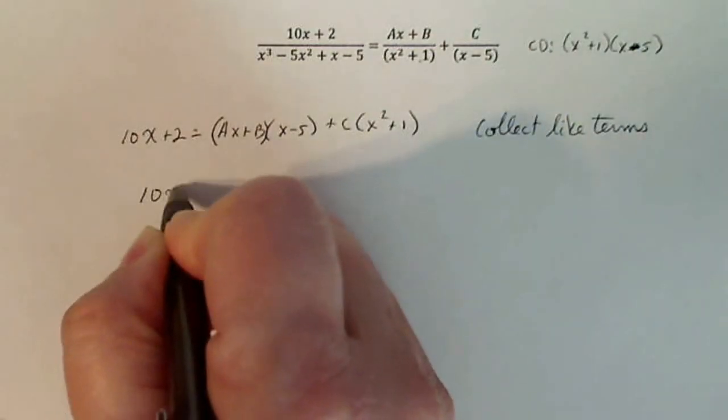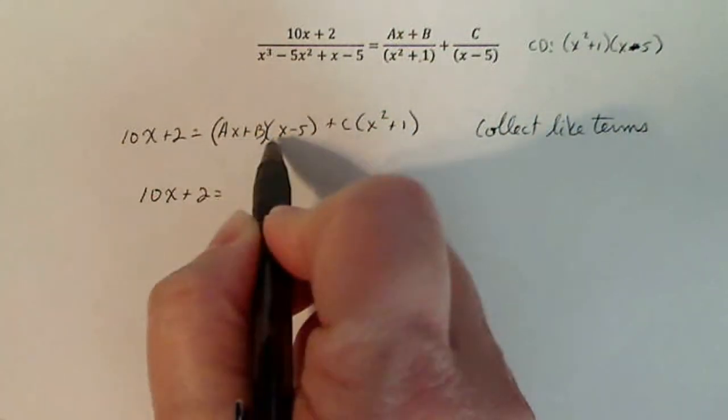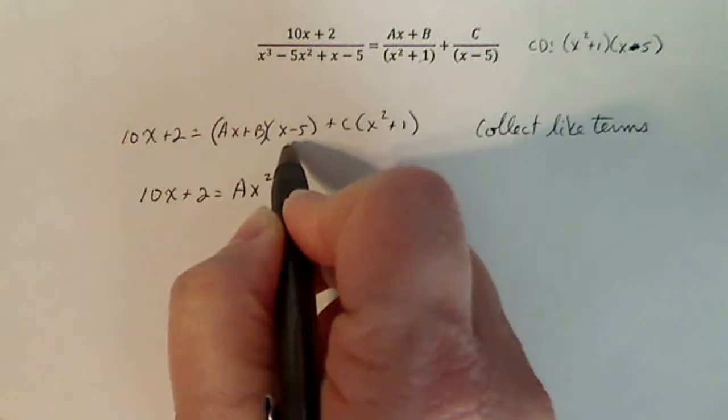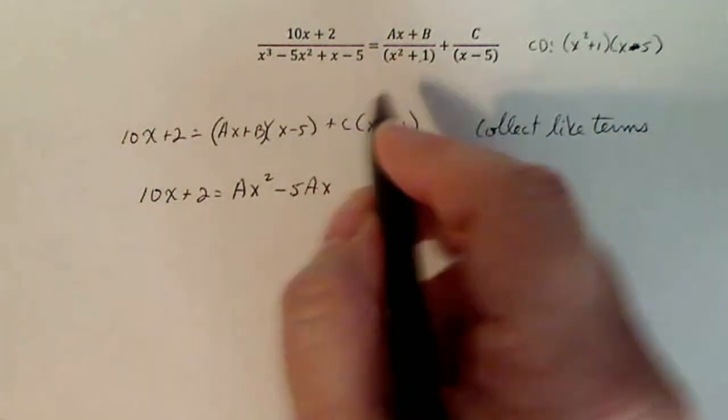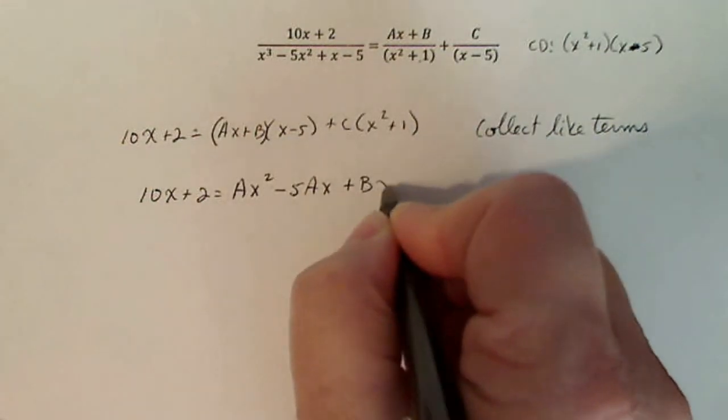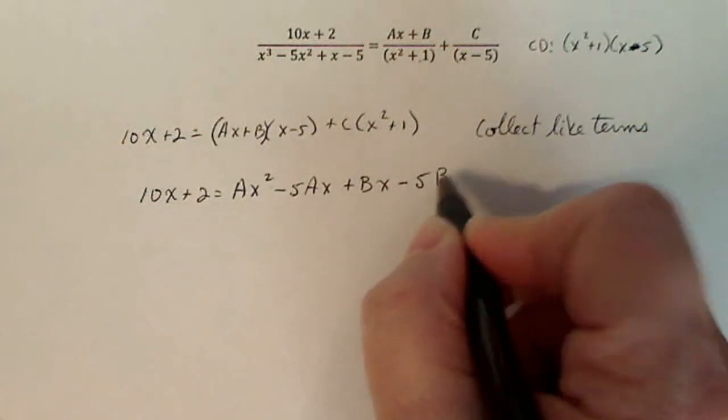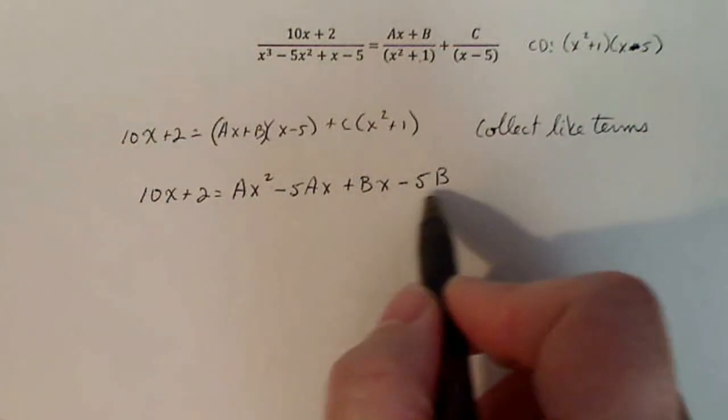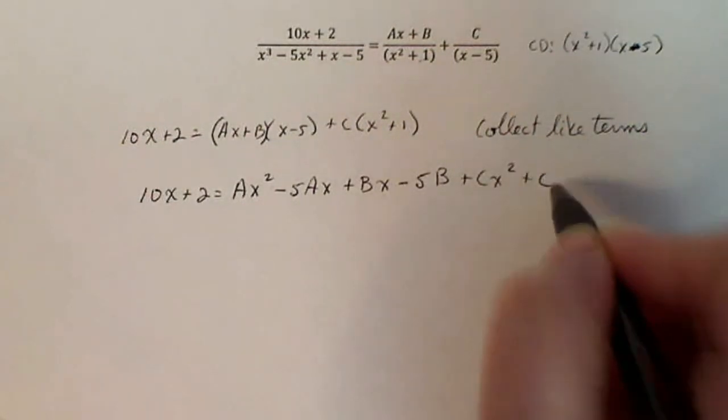So if here I have 10x plus two is equal to, now I have to FOIL this out. ax times x is ax squared, ax times negative five is minus five ax, b times x is bx, and b times negative five is negative five b. So this is an x squared term and x term and x term, a constant term. Notice there's no x in there. Now I'm going to keep going plus c x squared plus c.